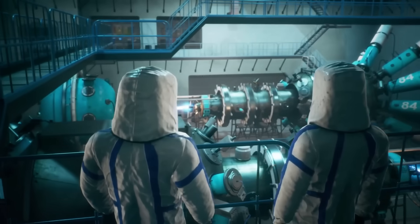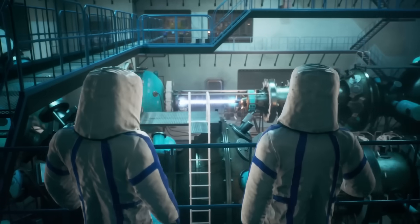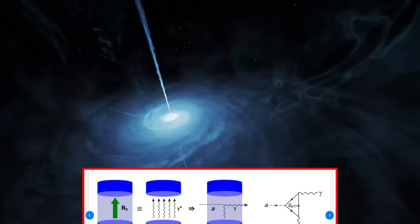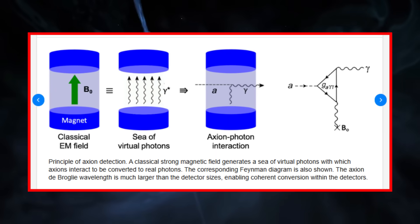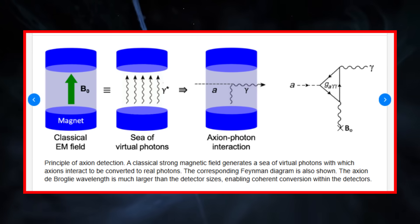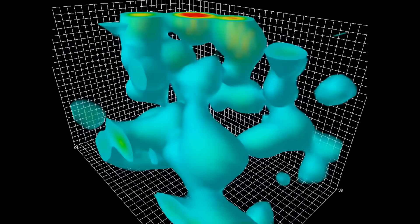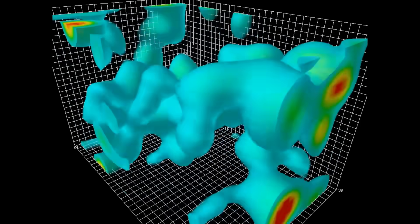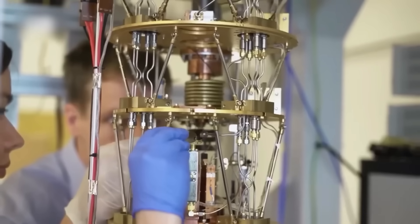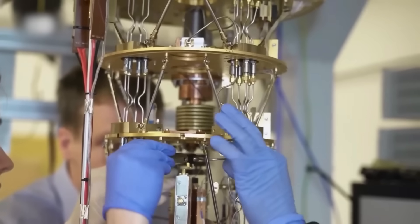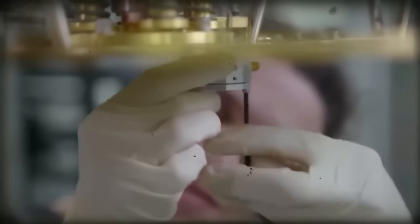Skepticism is a natural part of the scientific process, and that's what makes this discovery so exciting. The only way to confirm whether quantum computers have truly interacted with axions is through repeatable, peer-reviewed experiments. If future tests continue to show the same strange signals, the skeptics may have no choice but to reconsider.